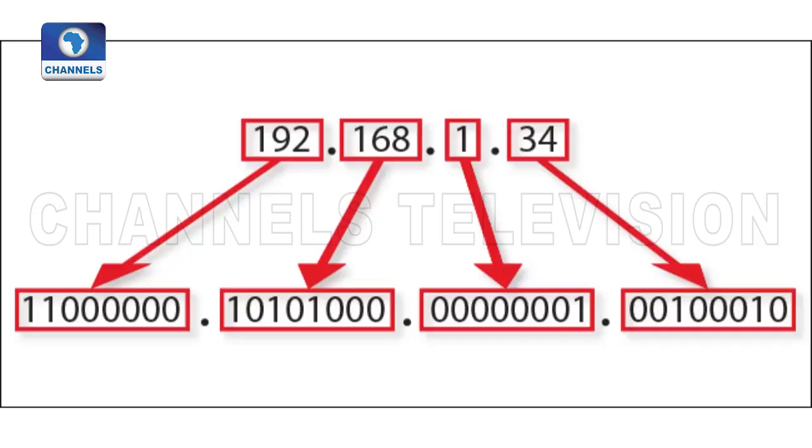When we talk about the DNS, we're talking about the domain name system. When you talk about the domain name, you cannot talk about it without the IP addresses. IP addresses are large numbers that are translated into alphabets to form a particular name which you desire, so that the Internet can communicate with the server and you'll be able to get the information needed.